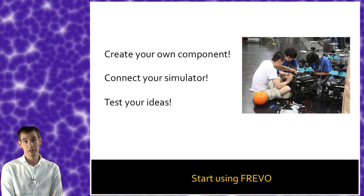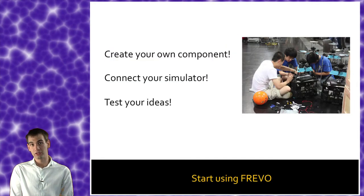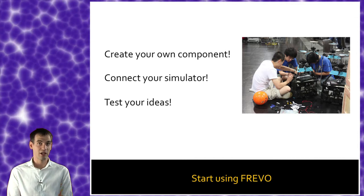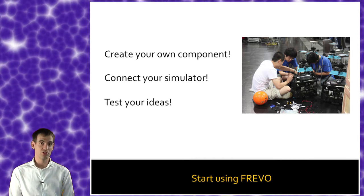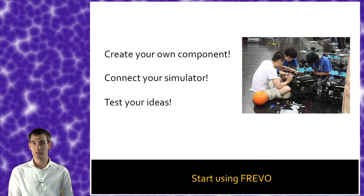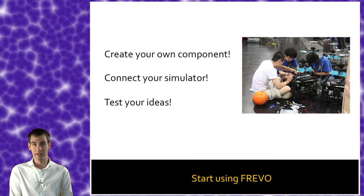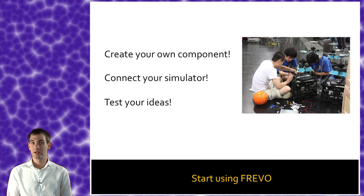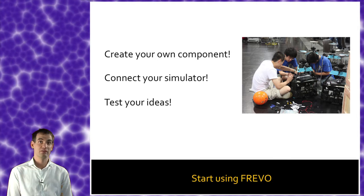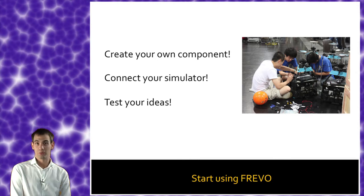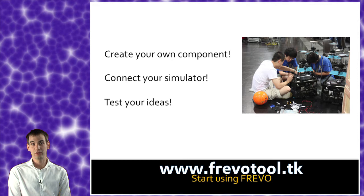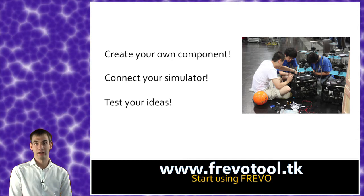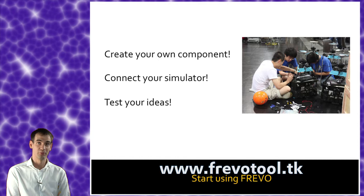I would like to encourage anyone who is interested in evolutionary computing and this new approach to download Frevo. It is really simple, written in Java, open source — one can change or modify anything, implement their own ideas, and share them with other members of the community. You can find it at frevo2.tk and be part of the community.